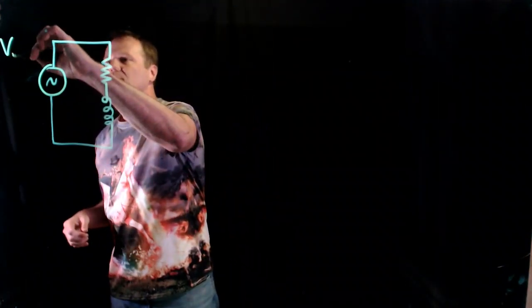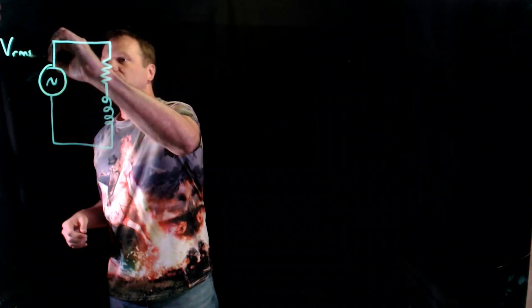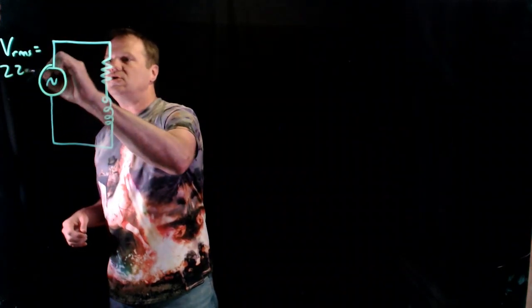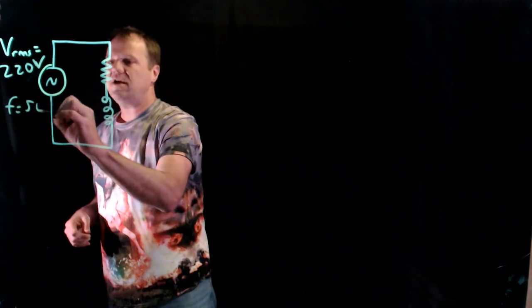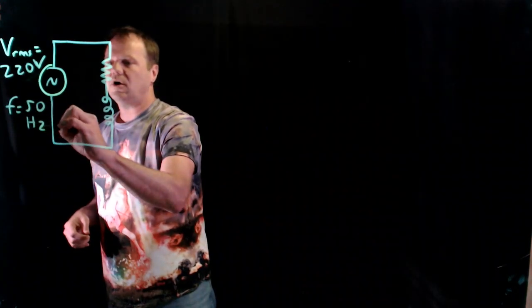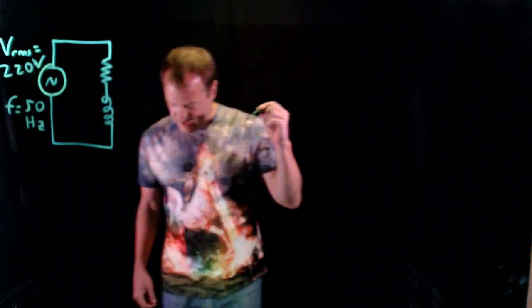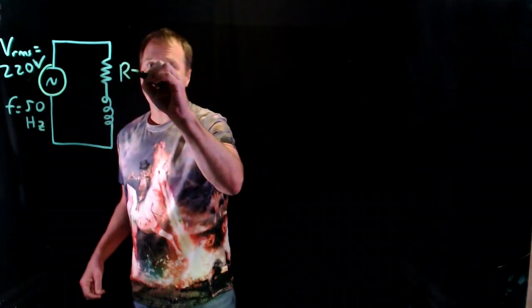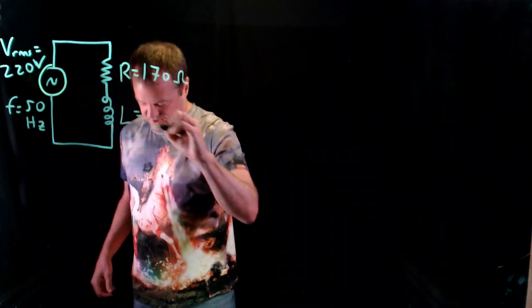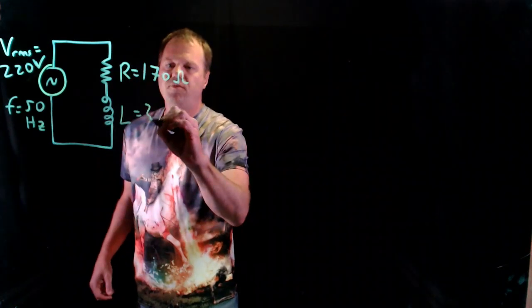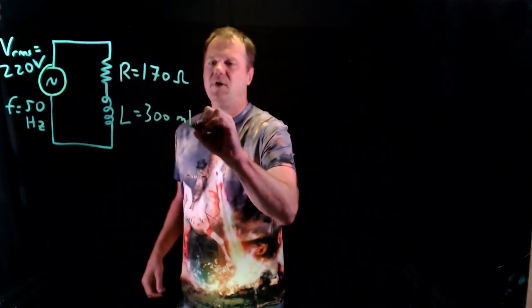So let's give some numbers here. We're going to go with European voltage, so the RMS voltage will be 220 volts and the frequency will be 50 hertz. The resistor has a resistance of 170 ohms, and the inductor has an inductance of 300 millihenries.